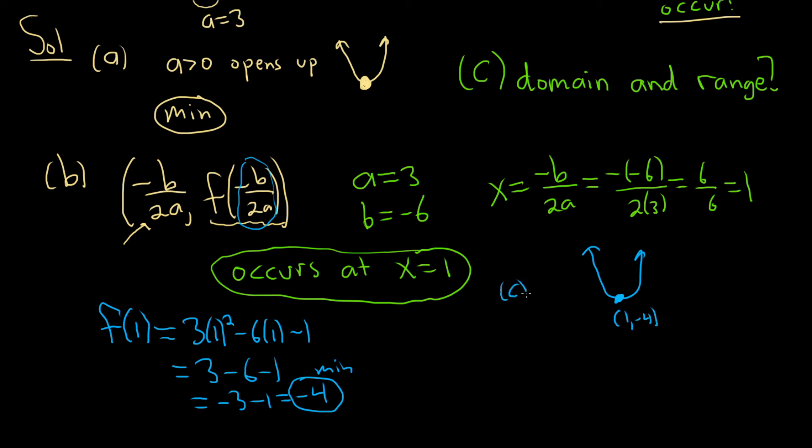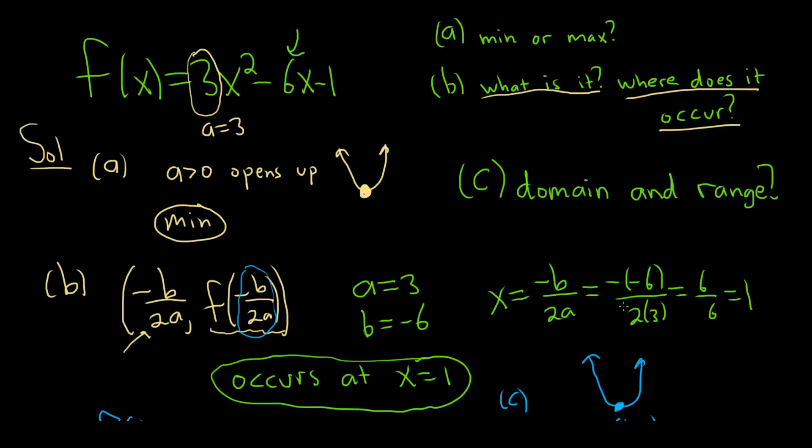So for part c, if we think about this, we can get all of the answers. So the domain is the set of all x values that give you y values. So there's no issue here. Every x value you plot on a graph is going to give you a y value. Even if you just look at the original function, right?